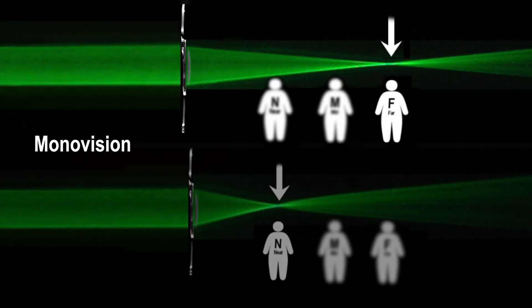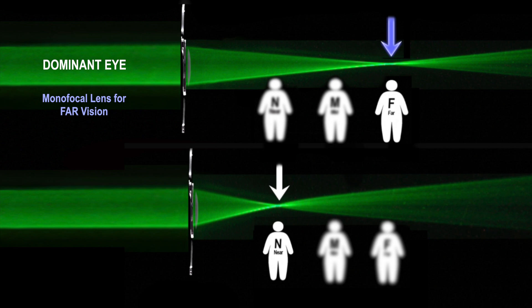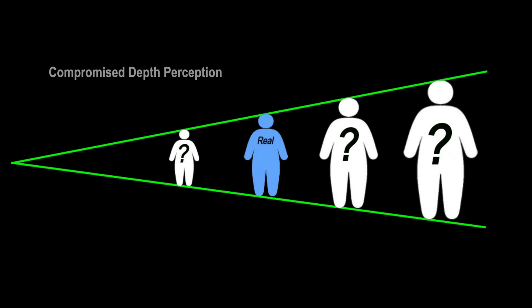Another monofocal lens option which is less common is called monovision. In monovision, a lens is placed for far vision in the dominant eye and a lens for reading in the non-dominant eye. This allows for visual clarity for both near and far distance in order to decrease dependence on eyeglasses. However, monovision is less common due to compromised depth perception and intermediate vision, given the dominant eye is focused for distance and the non-dominant eye is focused for near only.